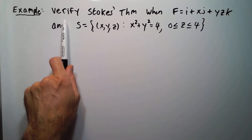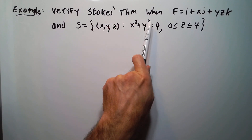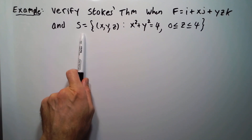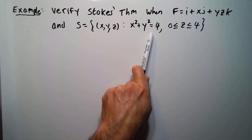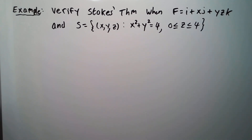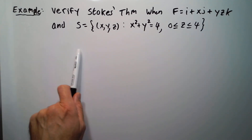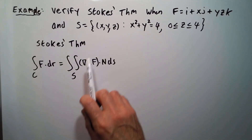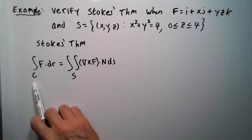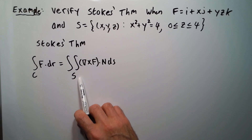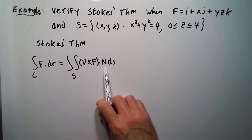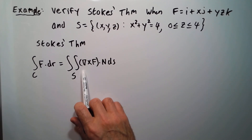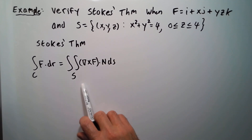Let's do another example. It says verify Stokes' Theorem when f is equal to i plus xj plus yzk, and s is the surface defined by x squared plus y squared equals 4, z goes from 0 to 4. So let me state Stokes' Theorem right here first. Stokes' Theorem says the line integral of f around the boundary of s equals the flux of the curl of f across s. So we have two things to show: this line integral on one side equals this double integral on the other side. I'm going to work on the double integral first.